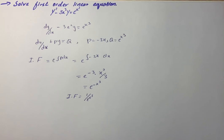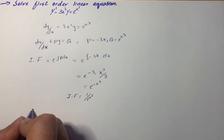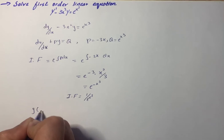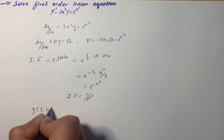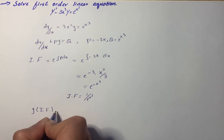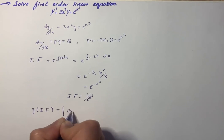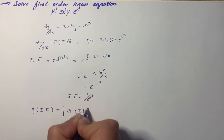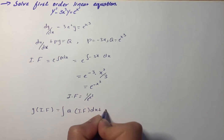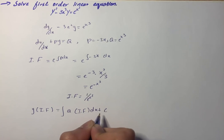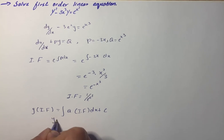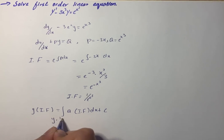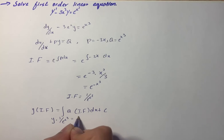Now we solve the first-order linear differential equation using the formula: y times the integrating factor equals the integral of Q times the integrating factor dx plus C. So y times 1 over e^(x cubed) equals the integral of e^(x cubed) times 1 over e^(x cubed) dx plus C.